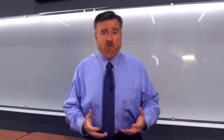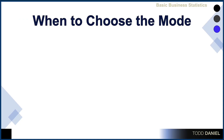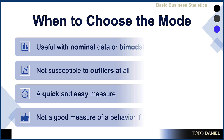When would we choose to use the mode as our measure of central tendency? The mode is useful when our data are at the nominal level because it is simply telling us what is the most frequently occurring score — such as what is the most popular dog toy among the dogs that we have analyzed. The mode is also useful when we have bimodal scale data in order to report the true distribution as it exists.